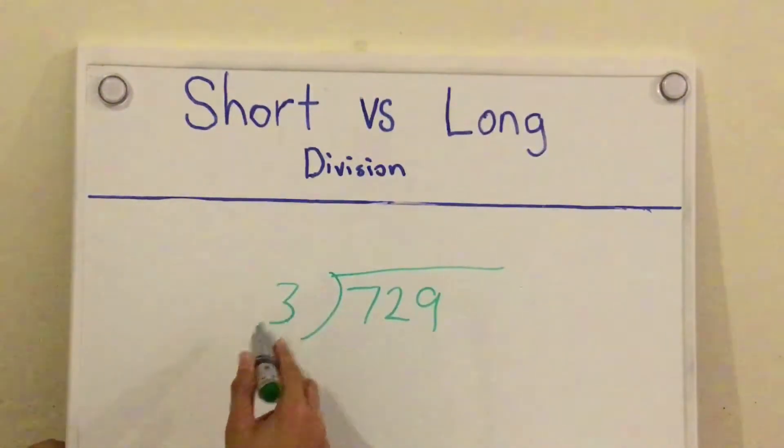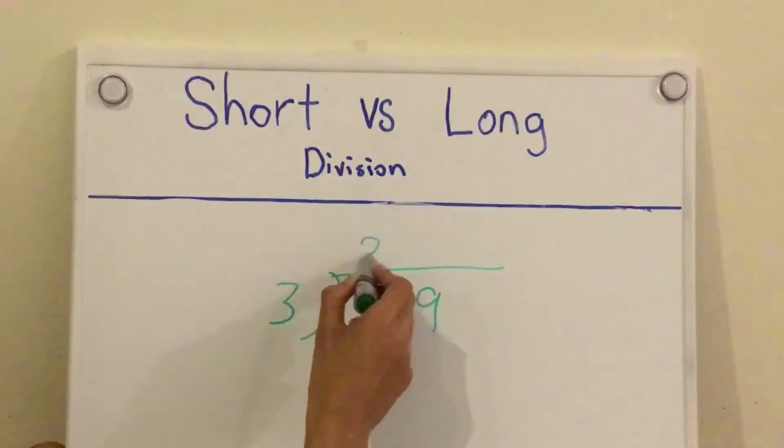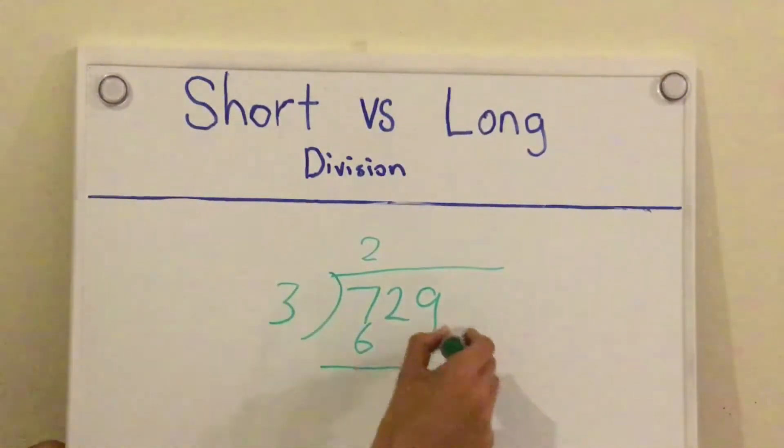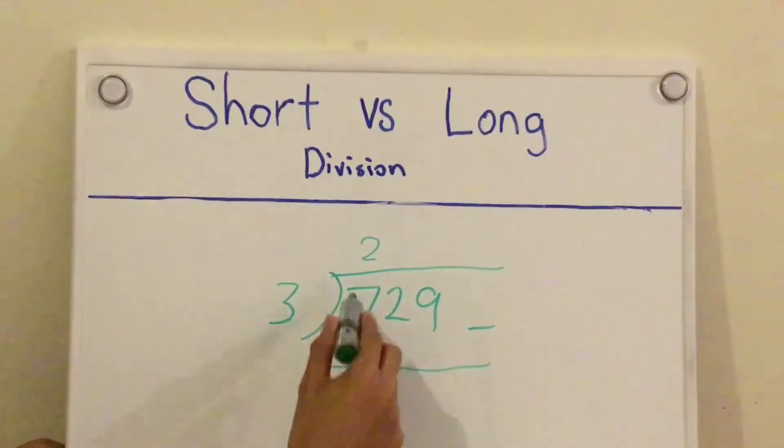So 7 divided by 3, so it goes into it 2 times. And then you go 2 times 3, and then you get 6, subtract, 7 minus 6 is 1, 2 minus nothing is 2. So you get to this point.